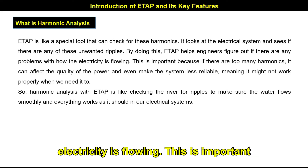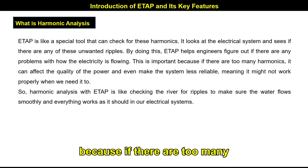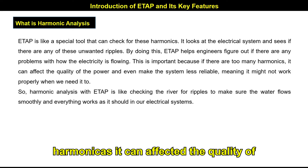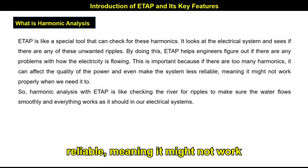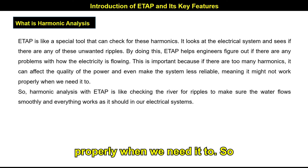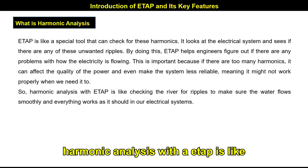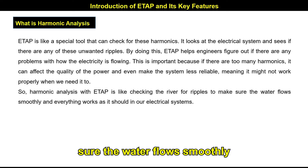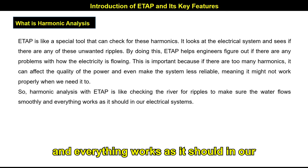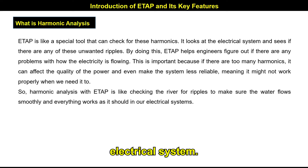It is like having a bumpy road instead of a smooth one. ETAB is a special tool that can check for these harmonics and see if there are any unwanted distortions. This is important because if there are too many harmonics, it can affect the quality of power and make the system less reliable. Harmonic analysis with ETAB is like checking the water level in a river to make sure the water flows smoothly and everything works as it should in the electrical system.